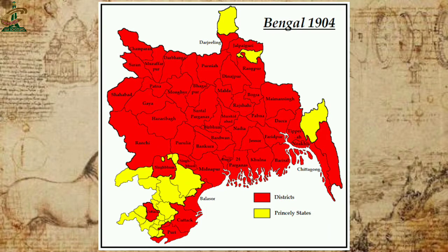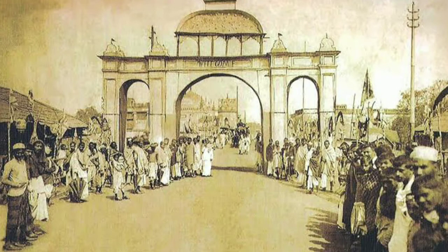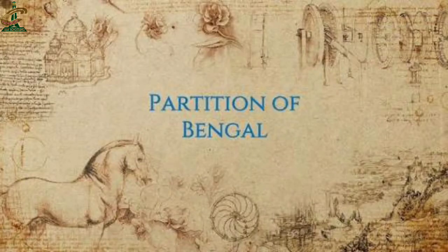تقریباً اس کی آبادی آٹھ کروڑ پچاس لاکھ کے قریب تھی اور اس کا رقبہ دو لاکھ مربع میل تک پھیلا ہوا تھا۔ یہ باقی تمام برٹش انڈیا کے صوبوں میں سب سے بڑا تھا۔ رقبہ کسے کہتے ہیں؟ رقبہ ایریا کو کہتے ہیں۔